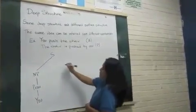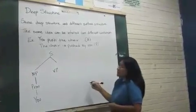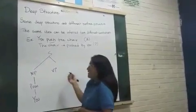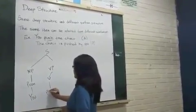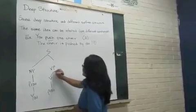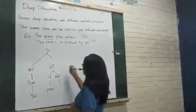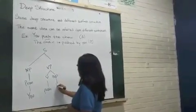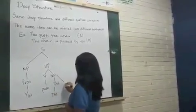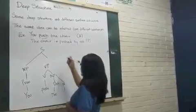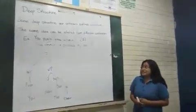Then we go to the verb phrase. From the verb phrase we start from push. We have the verb which in this case is push. And another noun phrase which has the determiner D and the noun, which in this case is chair. And let's go to the sentence number 2.